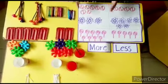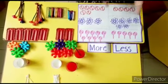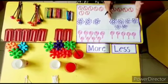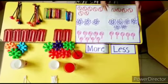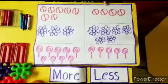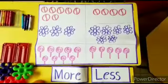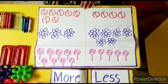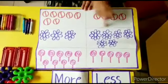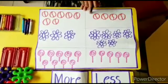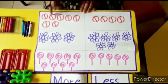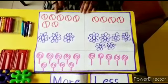This is one set of balls and this is another set of balls. If we compare these two sets, where are more balls? Here the balls are more and here the balls are less. Visually, by looking, we can decide.